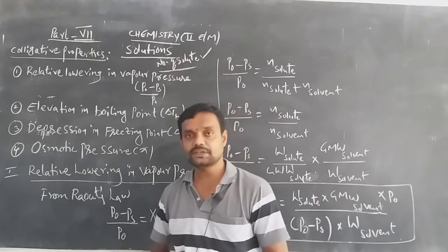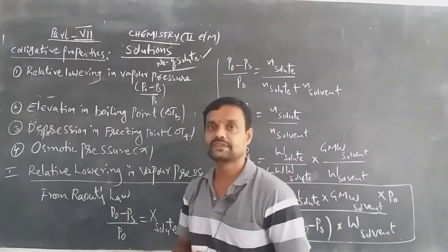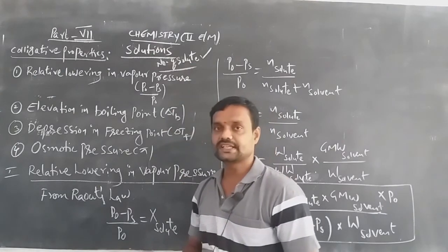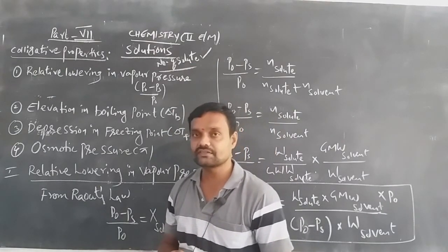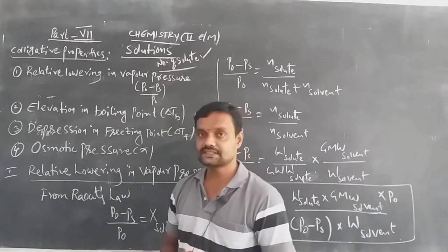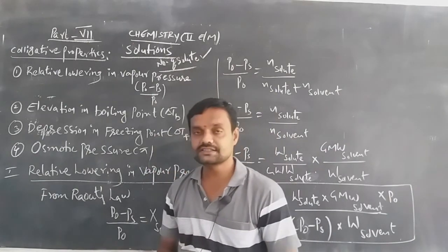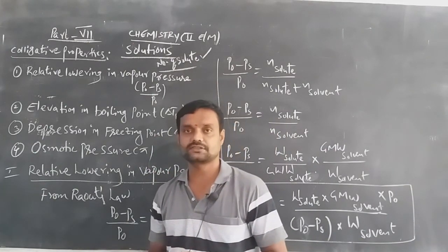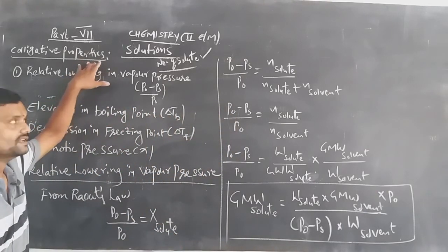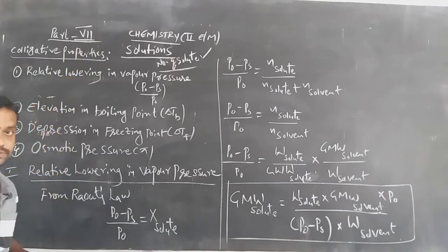Colligative properties depend only on the number of solute particles — they do not depend on the number of solvent particles. They can depend on the nature of the solvent particles. So, the properties which depend on the number of solute particles or the nature of the solvent particles are called colligative properties. There are four types of colligative properties.